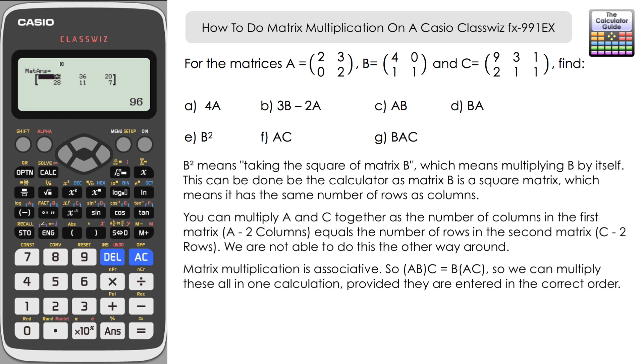And it does make some of the longer multiplications, such as F and G, that little bit quicker than if you were doing it by hand. It also has the dimension error to tell you when you're unable to multiply matrices together in a particular order.